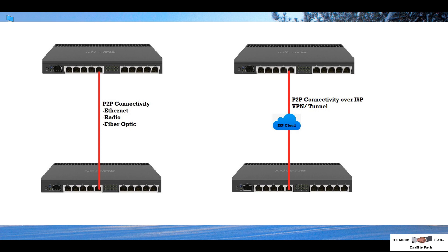In this video I am going to show you how to use MikroTik router bandwidth test tools. You can use these tools generally for two types of network troubleshooting. Number one: when two MikroTik routers are connected by a point-to-point link — it can be Ethernet, radio connectivity, or optical connectivity — you can measure link capacity and bandwidth. Secondly, you can use it when your router is connected by an internet service provider and you are using a tunnel between two branch offices to check the service provider bandwidth.